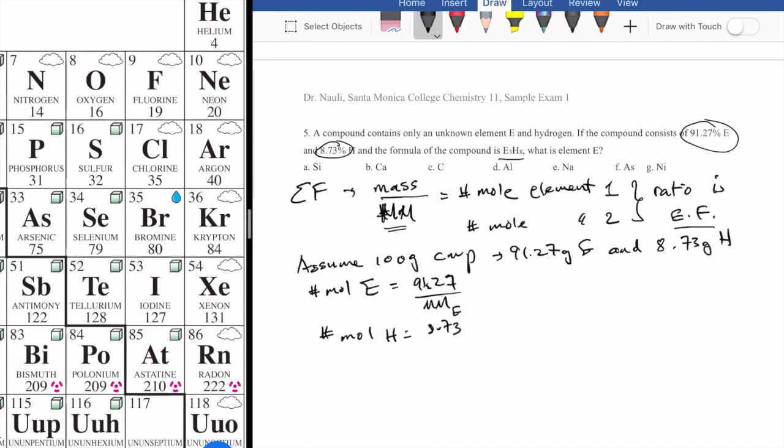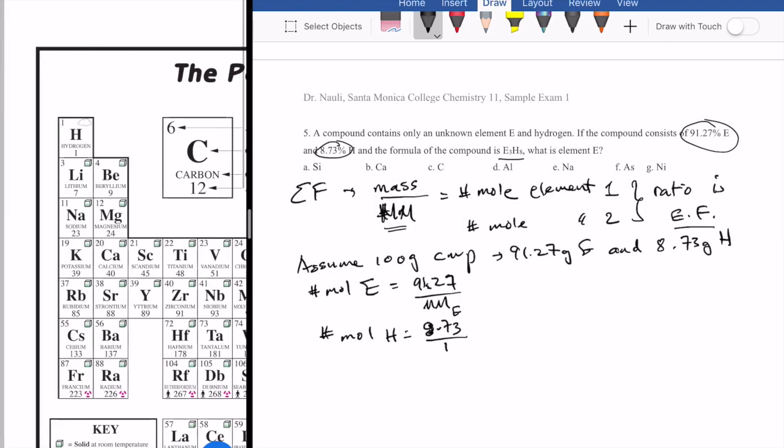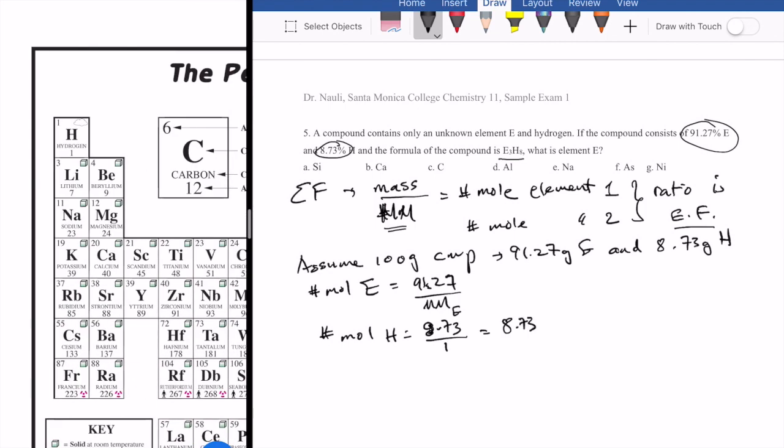8.73 divided by 1, because that's the molar mass of hydrogen. So that's equal to 8.73 moles. And so the idea is that the ratio of this number here to this number is also 3 over 8.